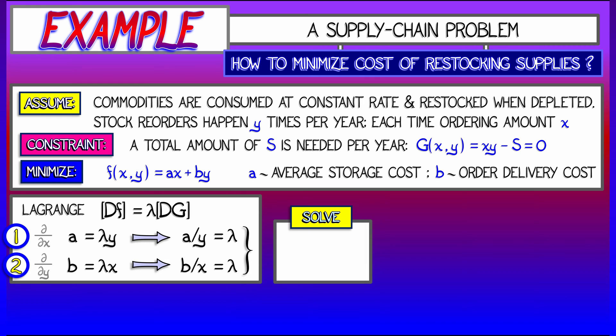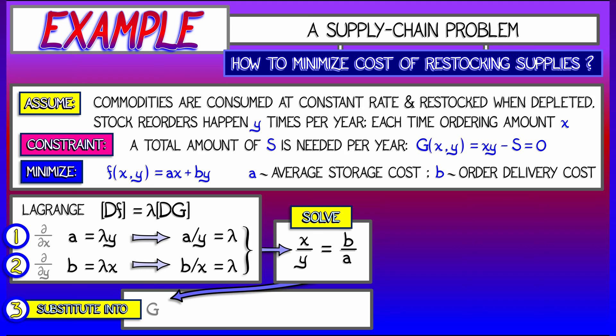And now set these equal to each other. Eliminate the lambda. And what we conclude is that the ratio of x to y, order amounts per reordering frequency, is in the ratio of b to a, order delivery cost to average storage cost.